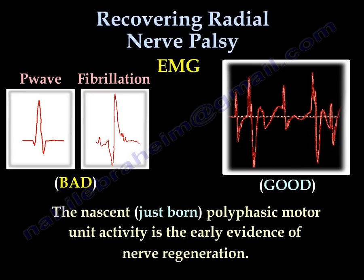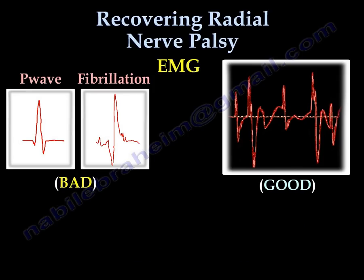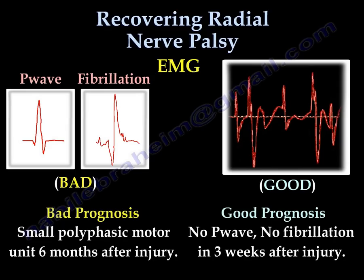A good prognosis is indicated by no P waves and no fibrillations at about 3 weeks after the injury, but with large polyphasic waves present at 3 to 4 weeks. A bad prognosis is indicated when there are small polyphasic units at 6 months after the injury.